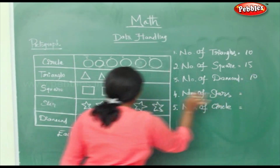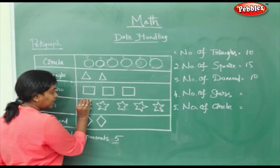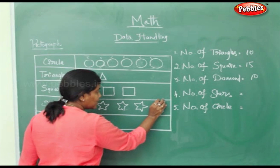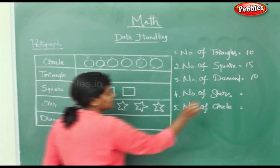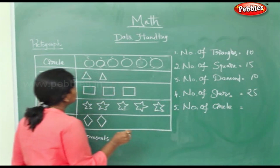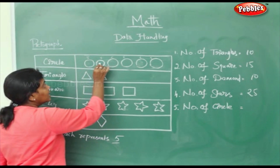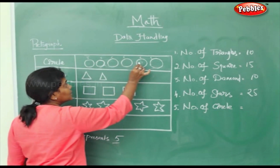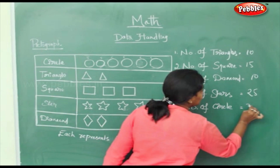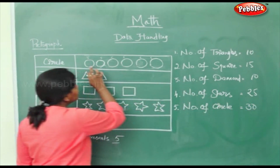Number of stars — where are the stars? Counting: 5, 10, 15, 20, 25 stars in total. Number of circles: 5, 10, 15, 20, 25, 30. Why 30? Because each circle represents 5.